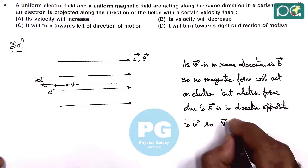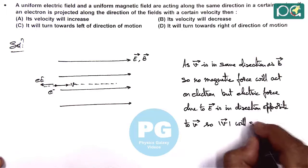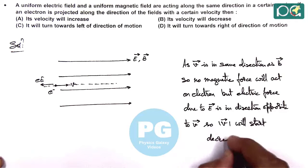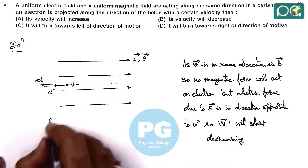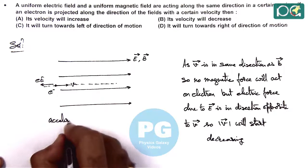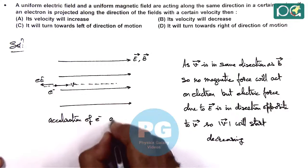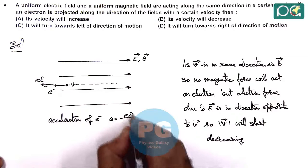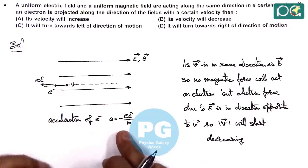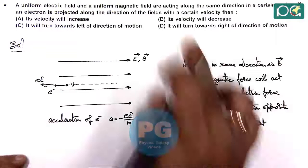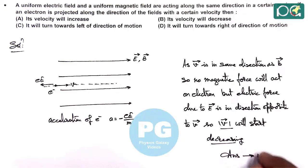Due to the retardation, the acceleration of the electron is a = -eE/m. Due to this negative acceleration, the velocity vector will start decreasing. So the answer to this question is option B: the velocity will decrease.